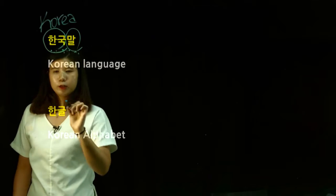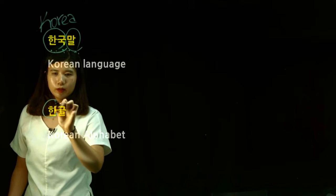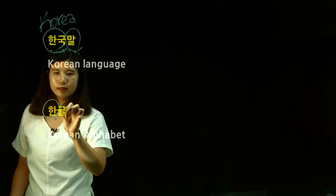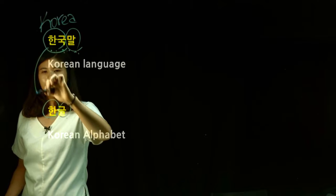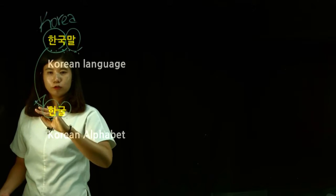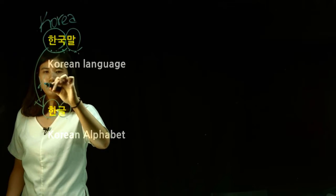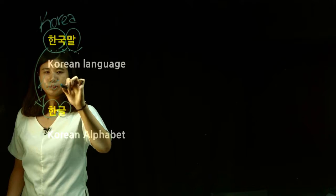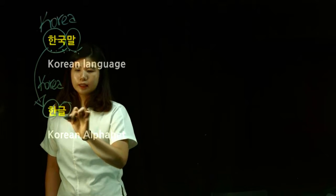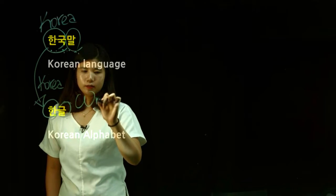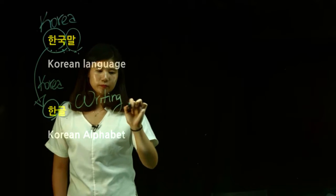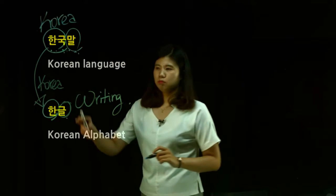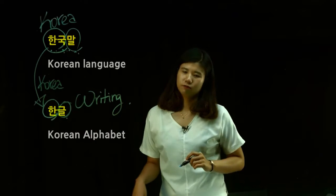The bottom one here is what we're trying to learn. It's 한글. And 한 is actually from 한국, which is Korea. And 글 means writing in Korean. So, Korean writing — Korean alphabet.